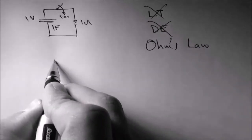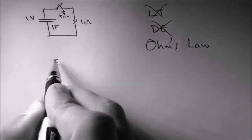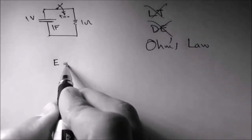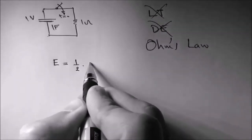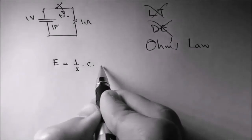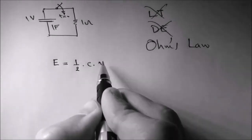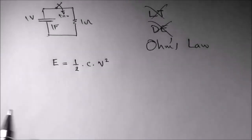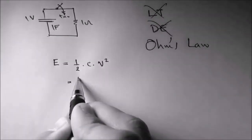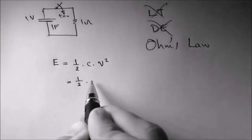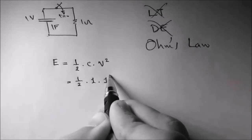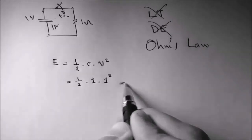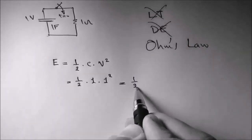Now the initial energy stored in the capacitor can be calculated from this formula: half multiplied by C times V squared. So we have half times 1 times 1 volt squared, and we have 0.5 joules.